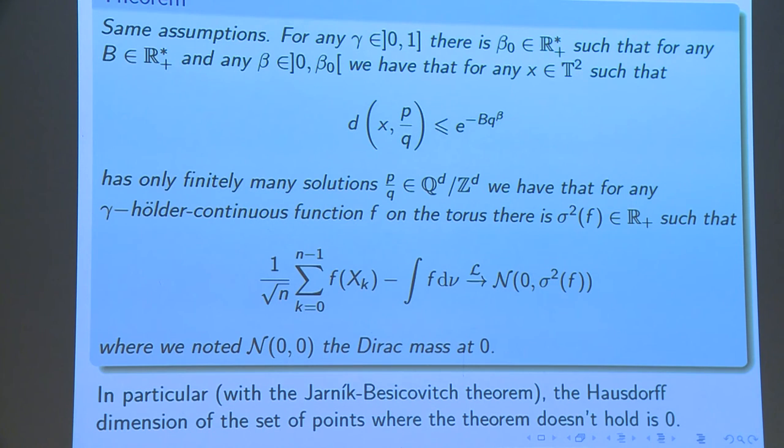So in other terms, if x is well approximable by a rational p over q, then q has to be very large. This is the assumption. And then I have the central limit theorem and even the law of the iterated logarithm if the variance is non-zero.